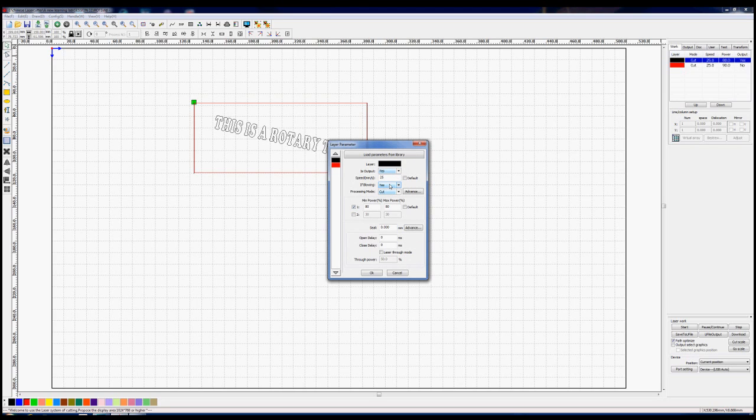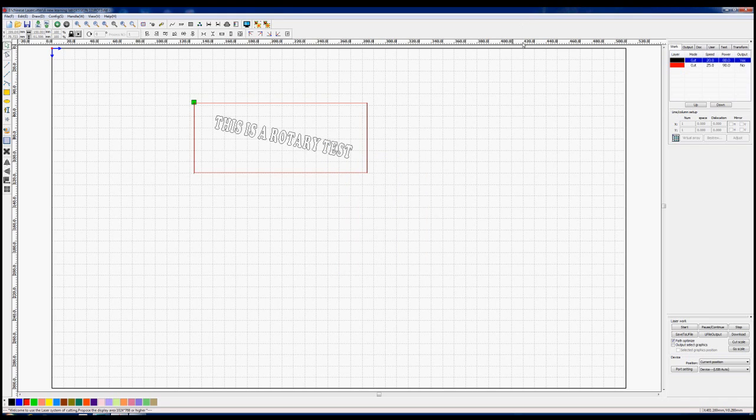So now we want to set some parameters for the black layer. Output, yes, we do want to output. And is it blowing? I don't think it really matters. Process mode, we definitely want it to be cut. Power, who knows, it's thin card, but let's say 80 and 80 will do me nicely. Speed, maybe we'll pull that down to about 20. The problem will be in the y-axis, we don't want things to move too quickly because we've got this rotational inertia problem going on, whether or not the relationship between the rollers and the cylinder we're putting on there will change because of slippage, I don't know.